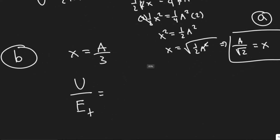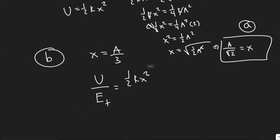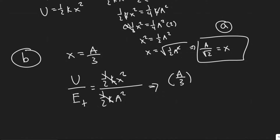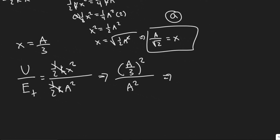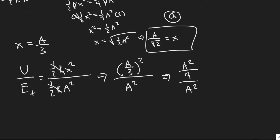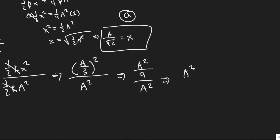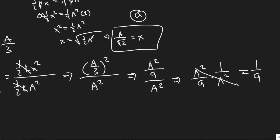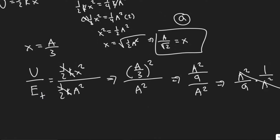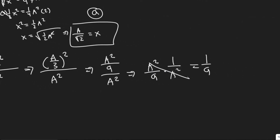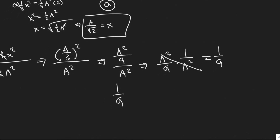All we need to do is plug in the formulas. The potential energy is one-half kx squared and the total energy is one-half kA squared. The one-half k terms cancel. We then have (A/3) squared divided by A squared, which we can rewrite as A squared over nine divided by A squared. This simplifies to A squared over nine times one over A squared, which equals one over nine. So the potential energy at this point is one-ninth of the total energy.